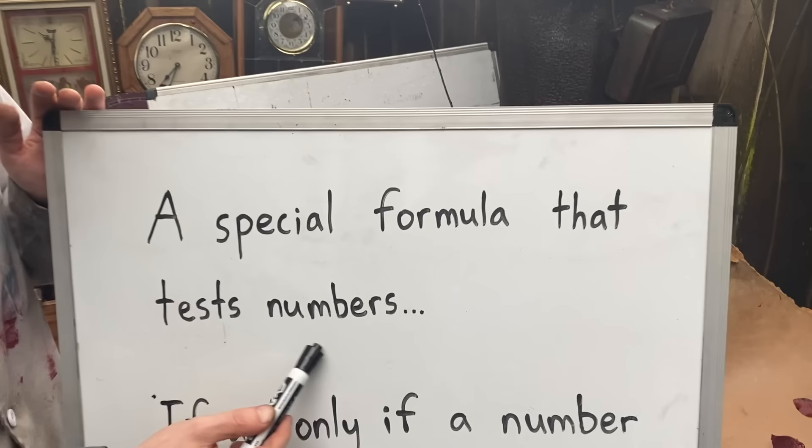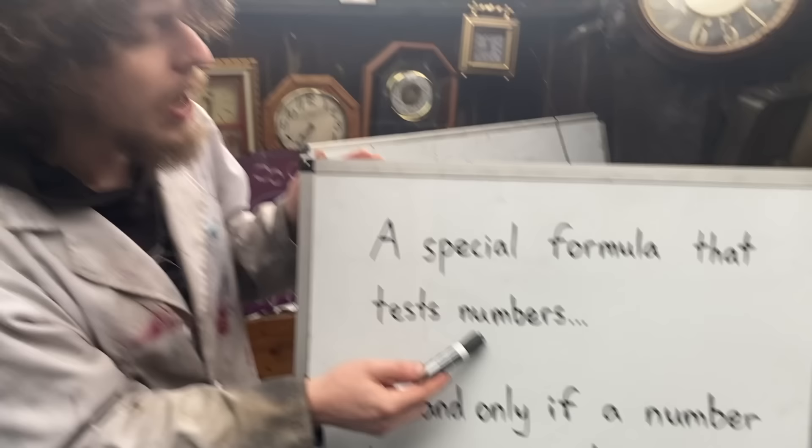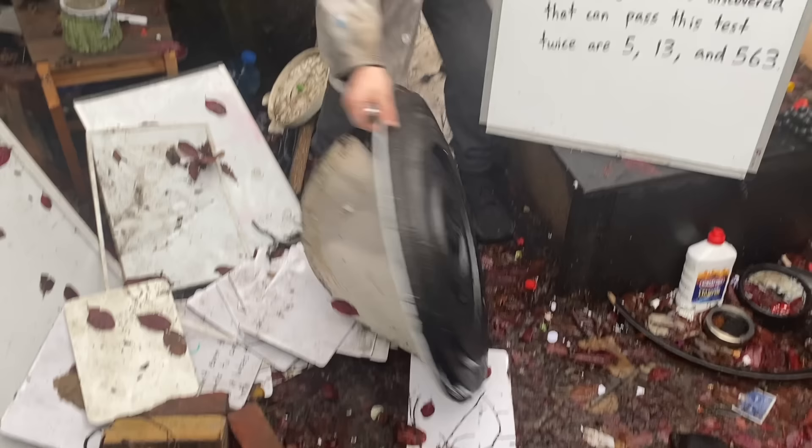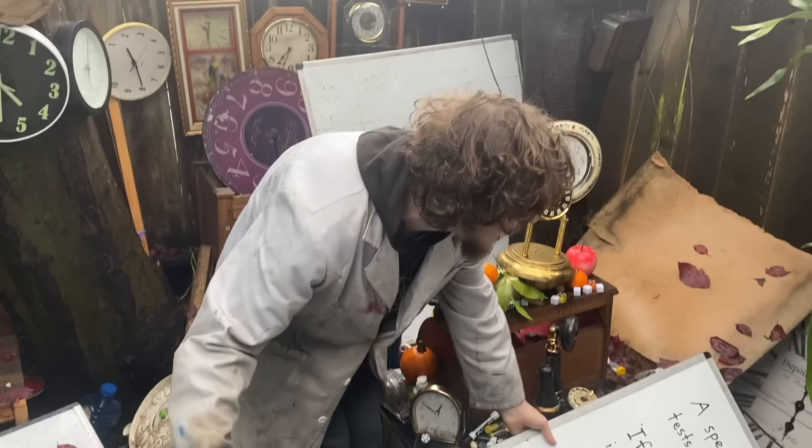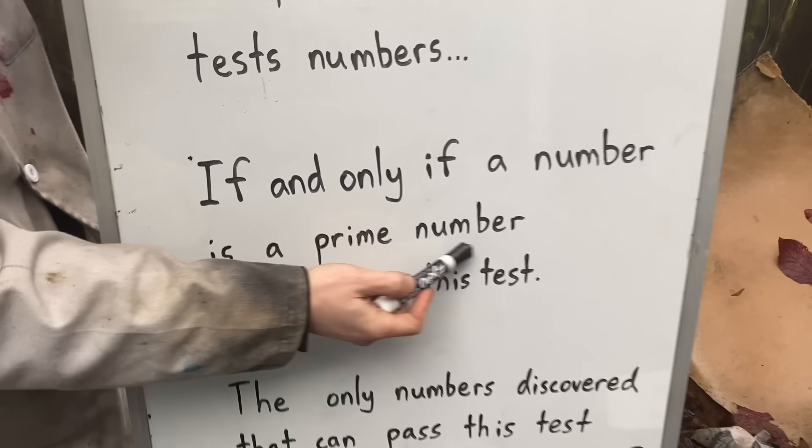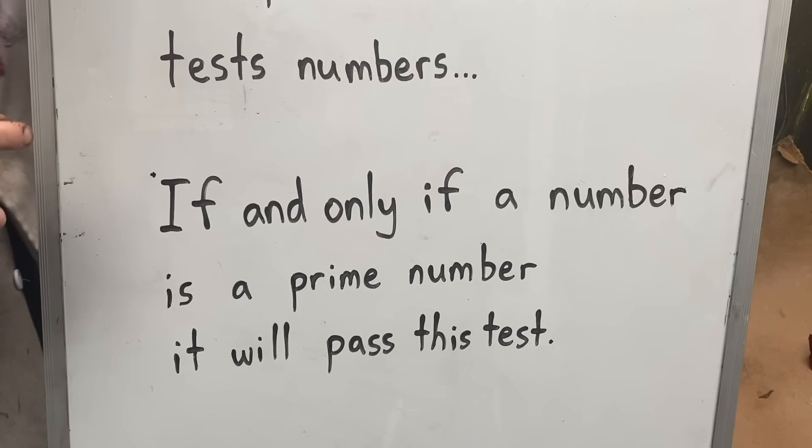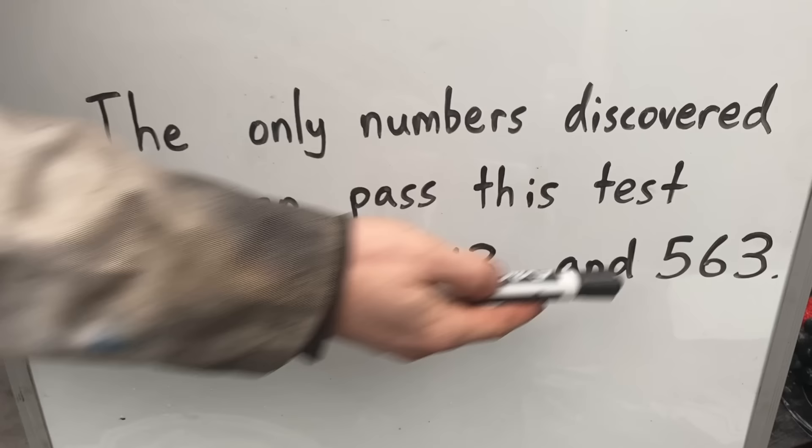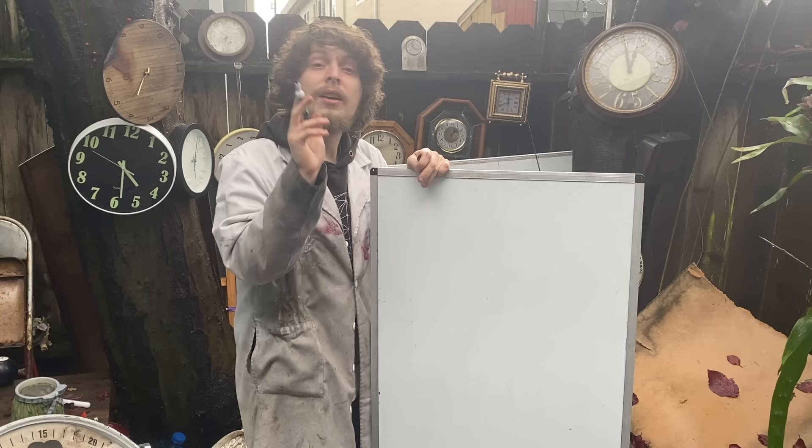By numbers today, again we're just going to be talking about whole positive numbers. Now this test, when you run a number through the formula, tells you whether or not it's a prime number if and only if it's a prime number. It can be said to pass the test, and there's only three numbers discovered by humanity that can be said to pass this test sort of twice, and those are 5, 13, and 563.